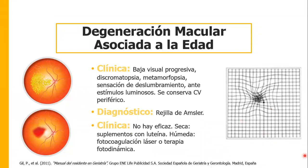Con esto terminamos todo lo que tiene que ver con la visión. Son tres patologías: la catarata, el glaucoma de ángulo cerrado y abierto, y la degeneración macular asociada a la edad. Recordemos que el paciente con glaucoma de ángulo cerrado que va a tener su crisis es aquel que sale del cine oscuro, se deslumbra y empieza con dolor intenso.